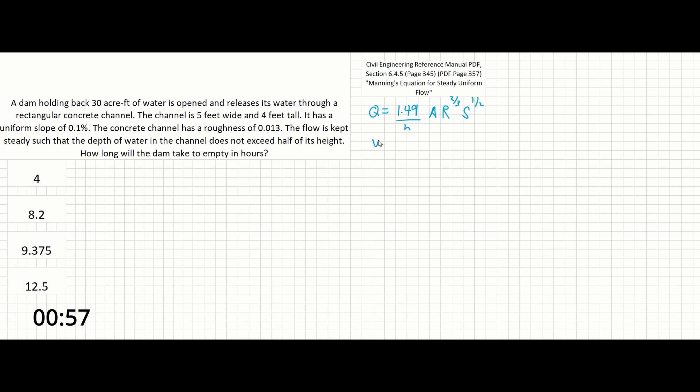And if you want to solve for just velocity, we can take area out of both sides of this and leave us with just these terms. Now, if you're having trouble remembering what hydraulic radius is, it's area over wetted perimeter.